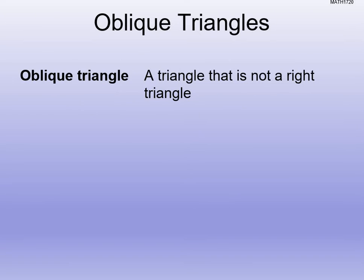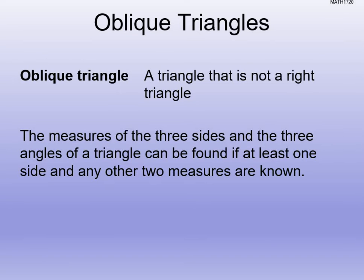Oblique triangles are triangles that are not right triangles. We need to be able to solve them when we don't just have right triangles and can use SOH-CAH-TOA. We're going to use the law of sines and law of cosines to work through this. The measure of the three sides and three angles of a triangle can be found if at least one side and any other two measures are known.